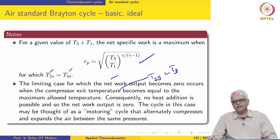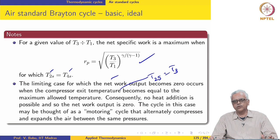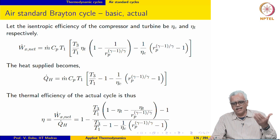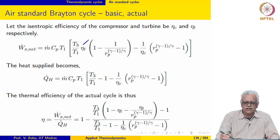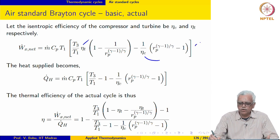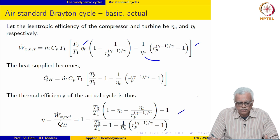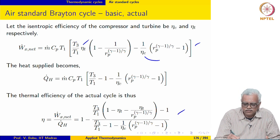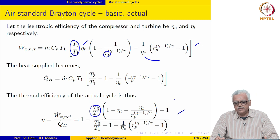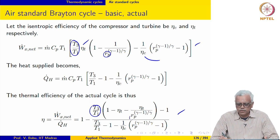This is for an ideal cycle where we have taken the isentropic efficiency of the turbine and the compressor to be 100 percent. Now, if we relax that assumption and assume that it is not equal to 100 percent, then the expressions that we derived before look different. The specific power depends on T3 over T1 and Rp, but the efficiency now depends on T3 over T1 as well, in addition to Rp.